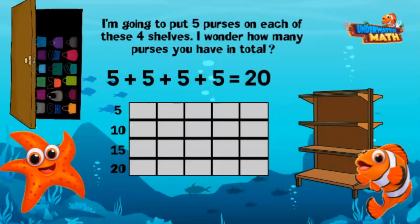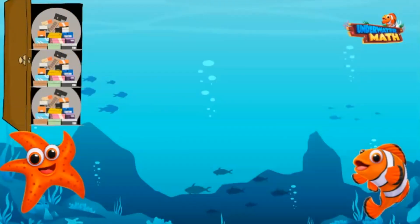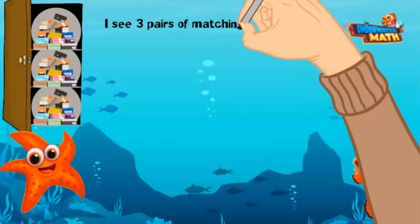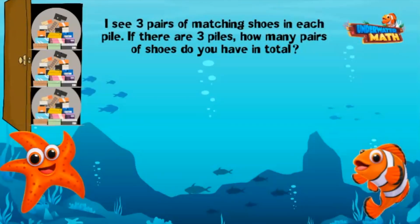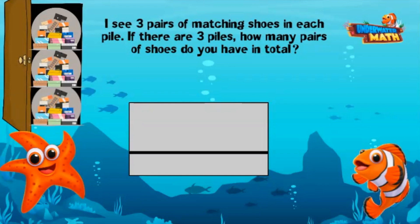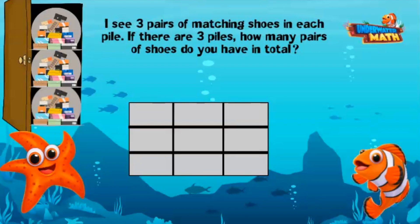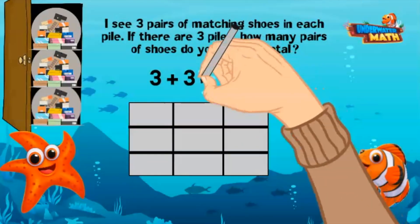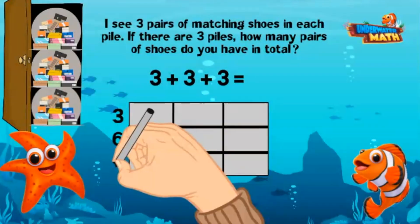Wow, you have a lot of purses! Let's organize my shoes now. Your shoes are in piles — I see three pairs of matching shoes in each pile. If there are three piles, how many pairs of shoes do you have in total? Let's draw an array again. Since there are three piles, let's draw three rows. There are three pairs of shoes in each pile, so I'll draw three columns. Now let's count each unit square to find the total: three, six, nine.